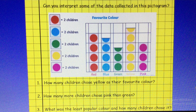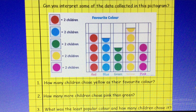And here we have a pictogram showing some data about a group of children's favourite colour. You are going to interpret some of the data by answering three questions. Question one: how many children chose yellow as their favourite colour? Question two: how many more children chose pink than green? Question three: what was the least popular colour and how many children chose it? Look very carefully at how many children each coloured circle represents. Pause the video now and have a go.